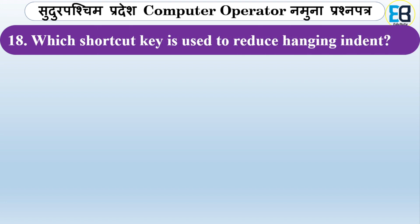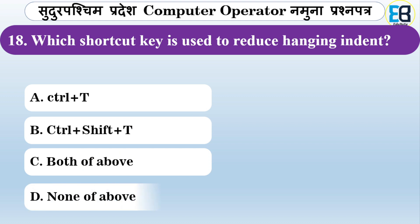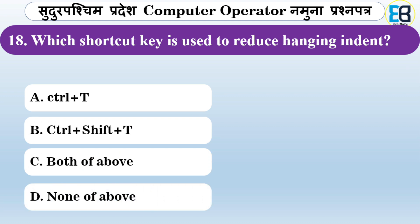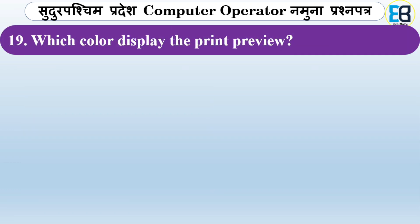Which shortcut key is used to reduce hanging indent? Options are Control+T, Control+Shift+T, or both. The correct answer is Control+Shift+T — that is the shortcut key used to reduce or decrease hanging indent.